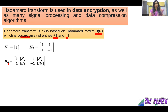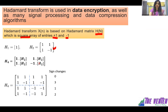H4 is calculated using the equation: 1 times H2 in the first row first column, 1 times H2 in the first row second column, 1 times H2 in the second row first column, and -1 times H2 in the second row second column. After substituting H2 and performing the calculation, we get the final H4 matrix.